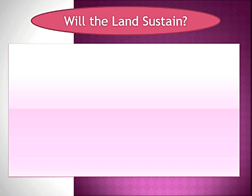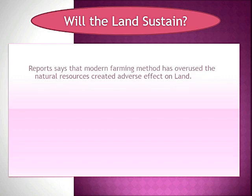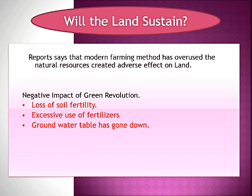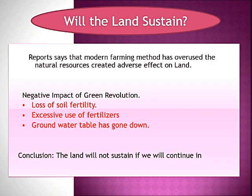In our previous video we had discussed about the green revolution. In order to increase production, farmers are putting excessive pressure on land by using hybrid seeds, heavy chemicals, and a lot of insecticides and pesticides, which is creating an adverse effect on land. There is loss of soil fertility, and groundwater level is going down every year. So we can conclude that if farmers continue in the same way, the land will not be able to sustain itself in future.